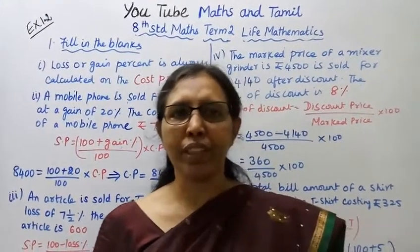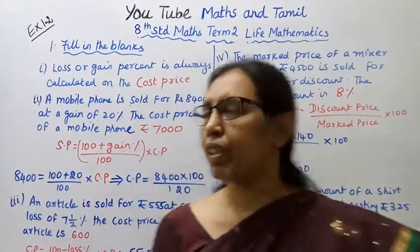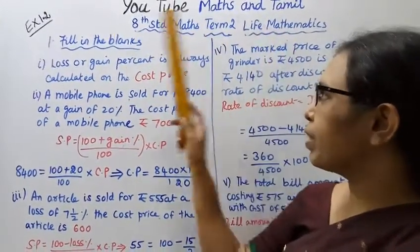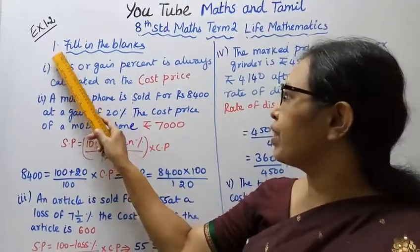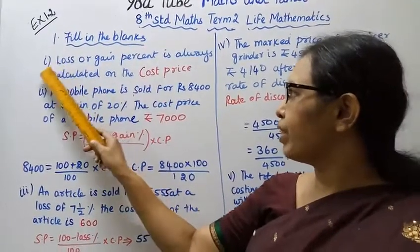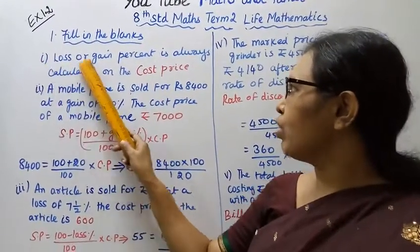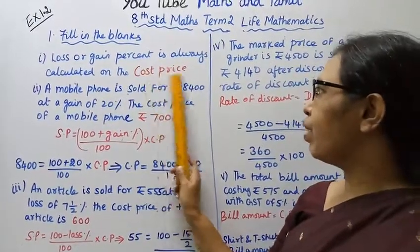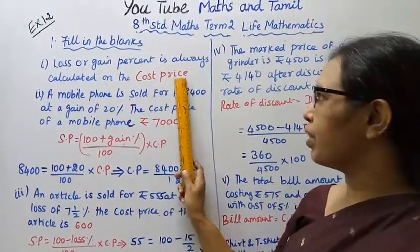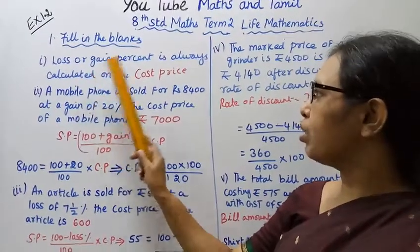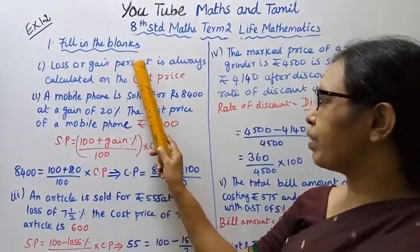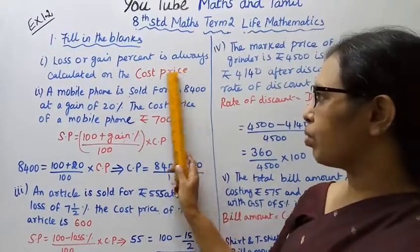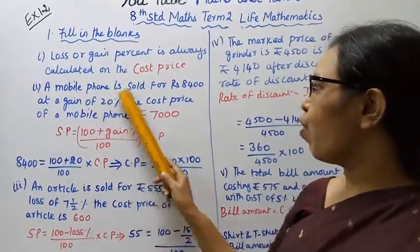Hello students, welcome to Max and Tamil channel. It's time for Life Mathematics Exercise 1.2, first sum — filling the blanks. First one: loss or gain percent is always calculated on the cost price. Loss or gain percent is calculated on the cost price.